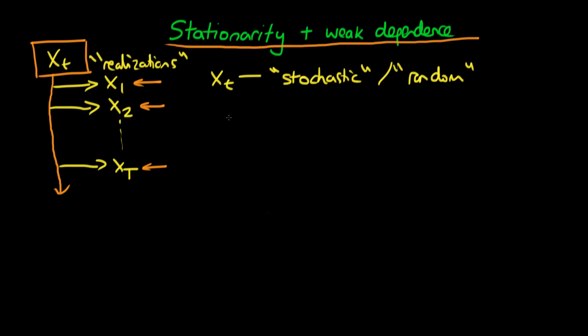Why do we actually care about whether a process is stationary and weakly dependent? Well, if these two conditions are satisfied then beta hat least squares tends in probability to the true population parameter beta if we use OLS on our sample.